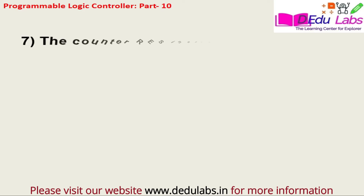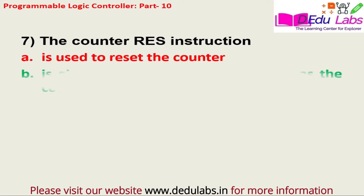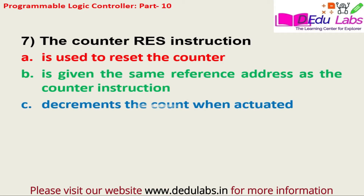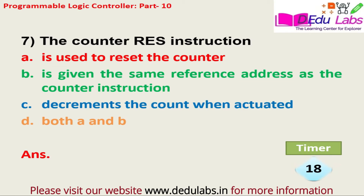Question number seven: The counter reset instruction — option A, is used to reset the counter; option B, is given the same reference address as the counter instruction; option C, increments the count when actuated; option D, both A and B. The answer is option D, that is both A and B.